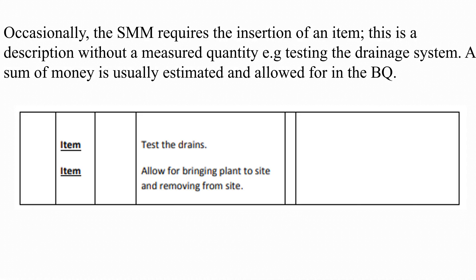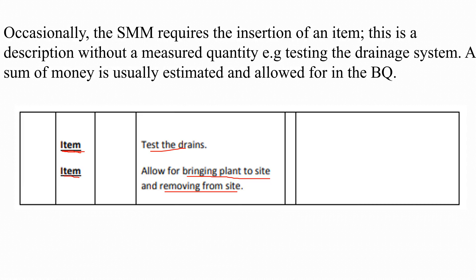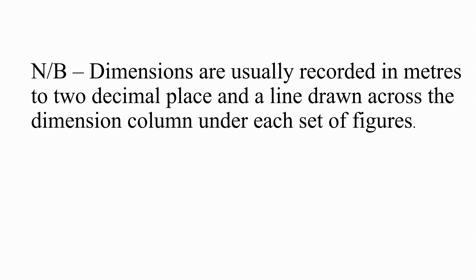In a takeoff you will find the term 'item.' An item is a provisional sum usually allowed in the bill of quantities for work that cannot be well-measured from drawings. Being provisional means it can change. Examples include testing the drains, bringing plant to site and removing it, and dewatering trenches — these cannot be clearly measured from drawings, so in the BQ we allow some sum of money and write 'item' in the takeoff sheet.